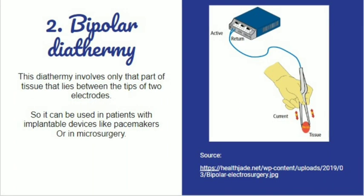Bipolar diathermy involves only that part of the tissue that lies between the tips of the two electrodes, because energy goes from the generator to one electrode, through that tissue, and then to the other electrode and back to the generator. So it can be used in patients with implantable devices like pacemakers, because current will not pass through the body. They are also used in microsurgery because they can target very small tissues that fit between those tweezers.